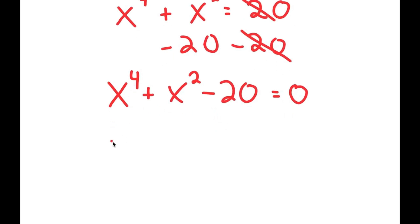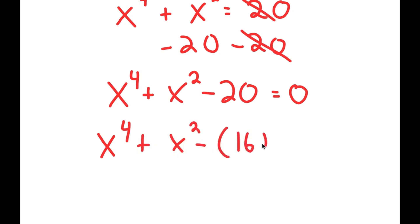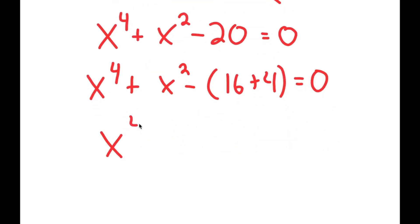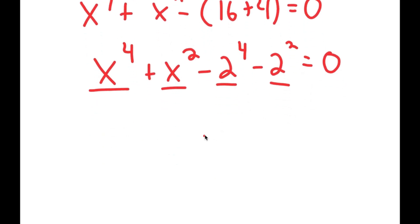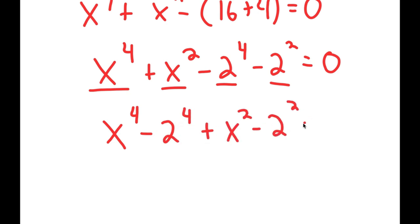To solve this, I want to rewrite this as x to the power of 4 plus x squared minus 16 plus 4. I rewrote 20 as 16 plus 4, because negative 16 is the same thing as negative of 2 to the power of 4, and negative 4 is the same thing as negative 2 squared. Now I can put the powers of 4 together and the powers of 2 together, so I get x to the power of 4 minus 2 to the power of 4, plus x squared minus 2 squared, is equal to 0.